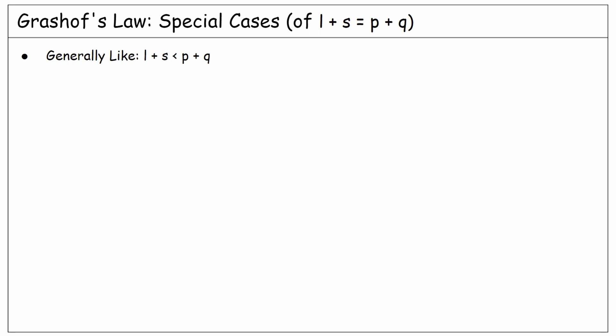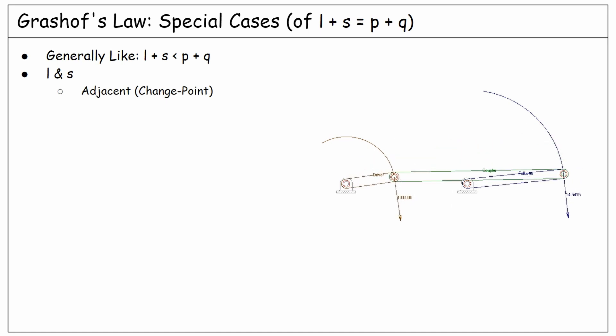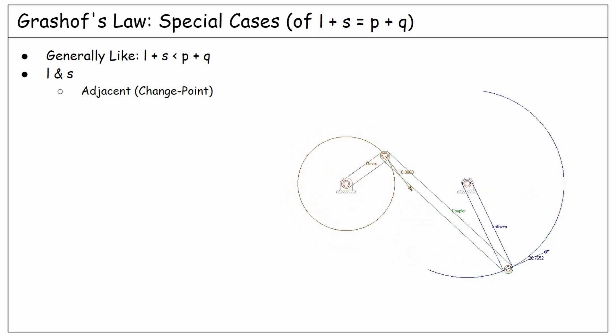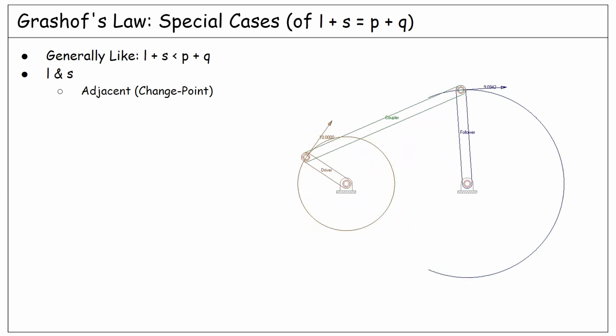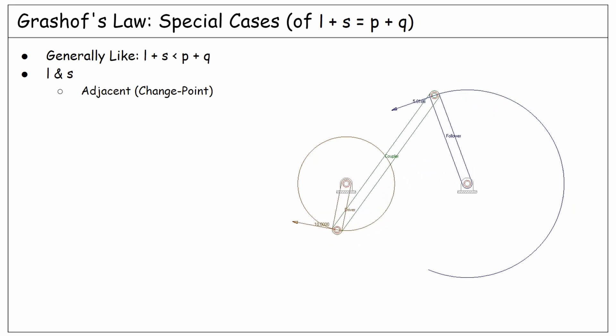Let's start thinking about the situation of the longest and the shortest links. If they are adjacent, then we will have a change point, as you see in this example. A change point happens when all the links become aligned. Just look at the motion of this linkage and notice how many times all the links become aligned and how the linkage might move after each of those change point situations.